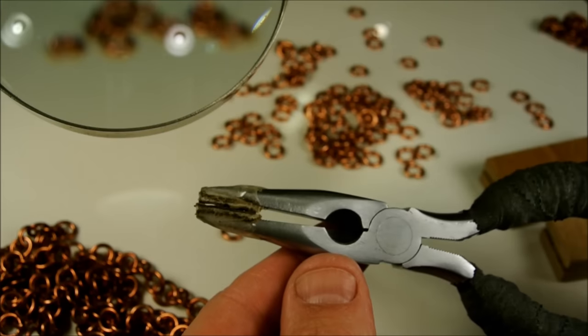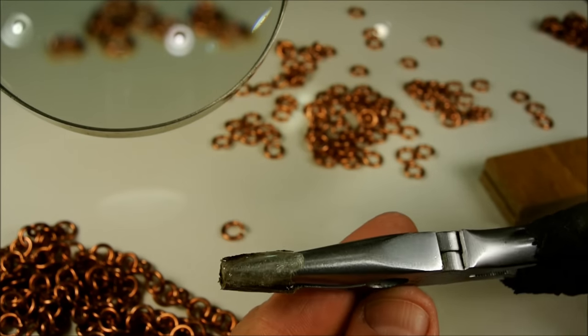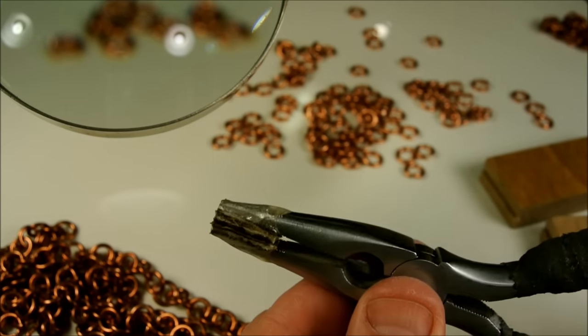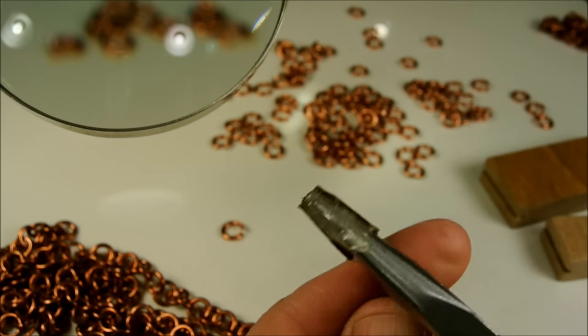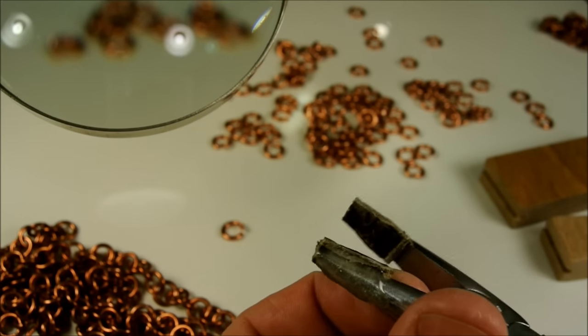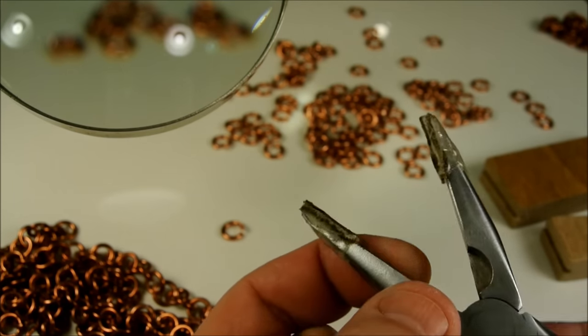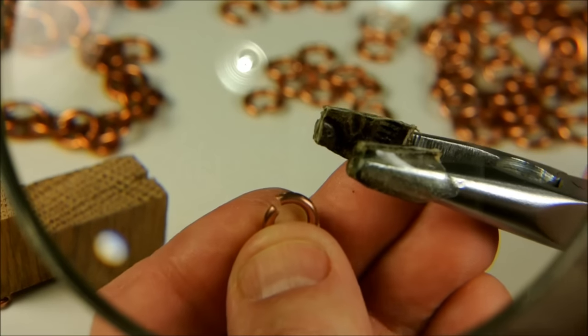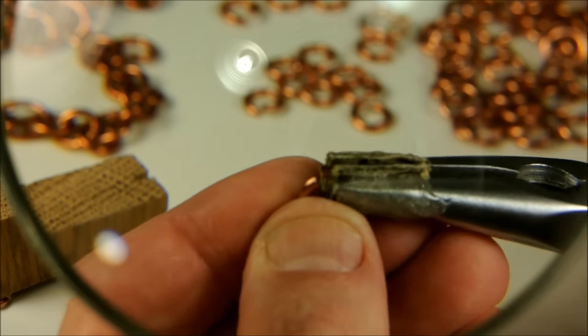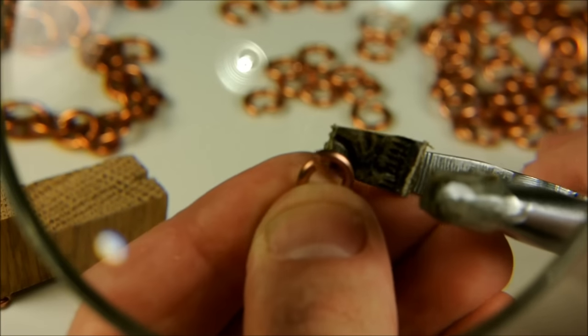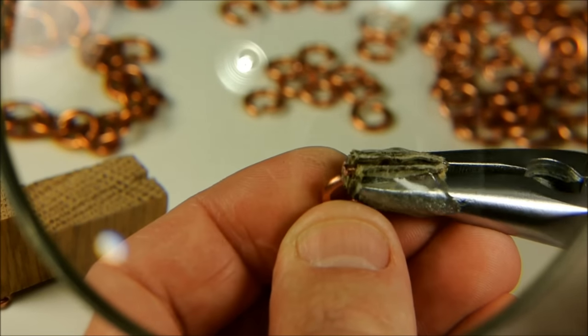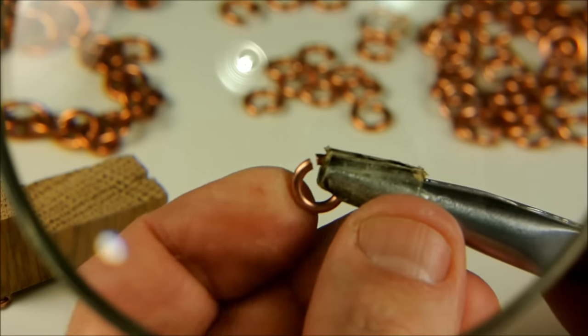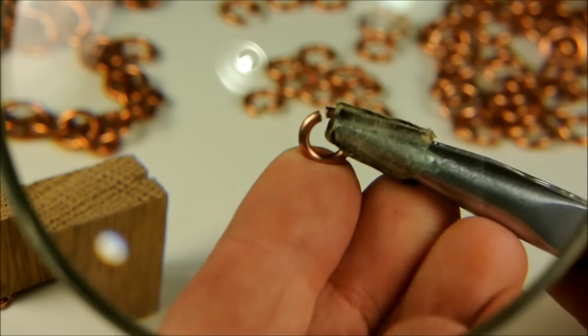Now take a close look at this tool because it will be your friend during this process. This is a regular pair of needle nose pliers and what I've done is used epoxy to affix two pieces of rawhide leather to the tips. The leather keeps the copper from being scratched while you work it, and if you look really closely you can see that use has worn a nice little groove into the leather that keeps the link from slipping as you work it.